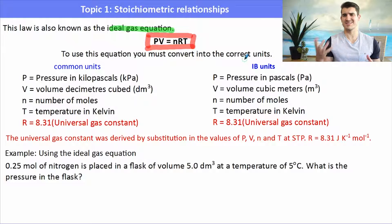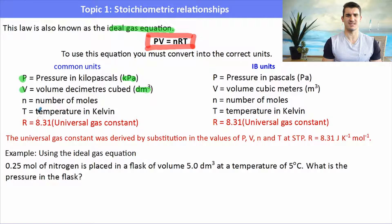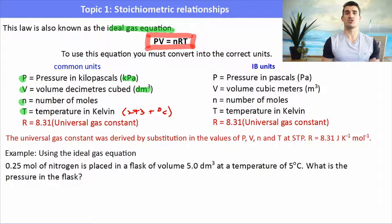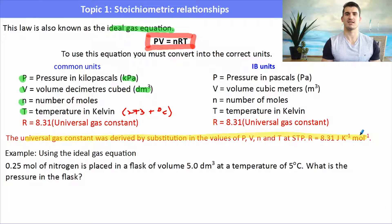There are common units and IB units. P is pressure, commonly measured in kilopascals. V is volume, often measured in decimetres cubed. N is the number of moles. T is temperature in Kelvin — remember, Kelvin equals 273 plus degrees Celsius. R is the universal gas constant, derived by substituting different values of P, V, and T.